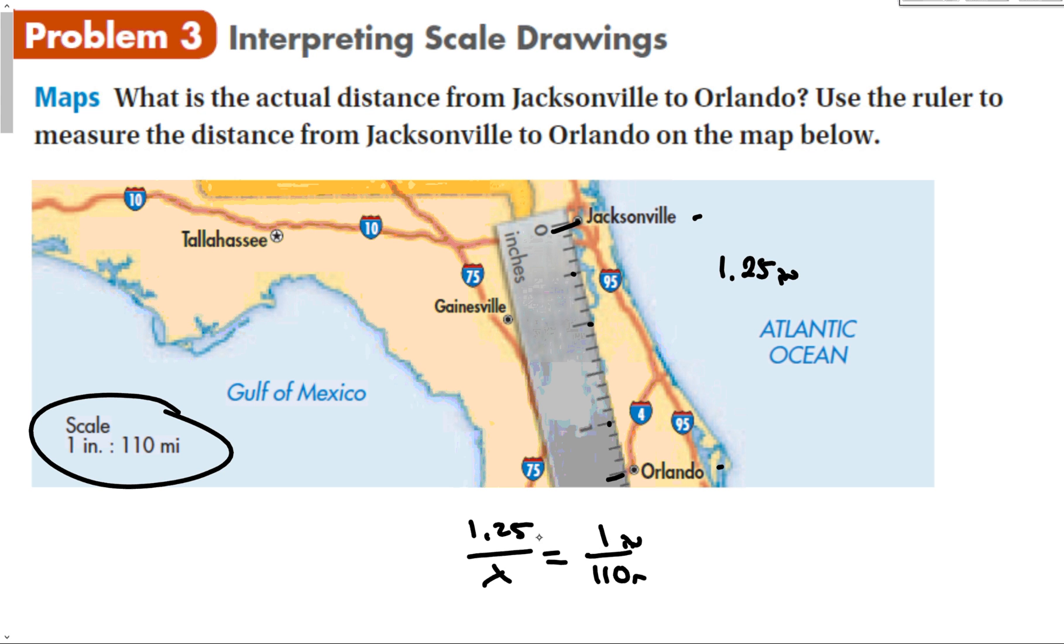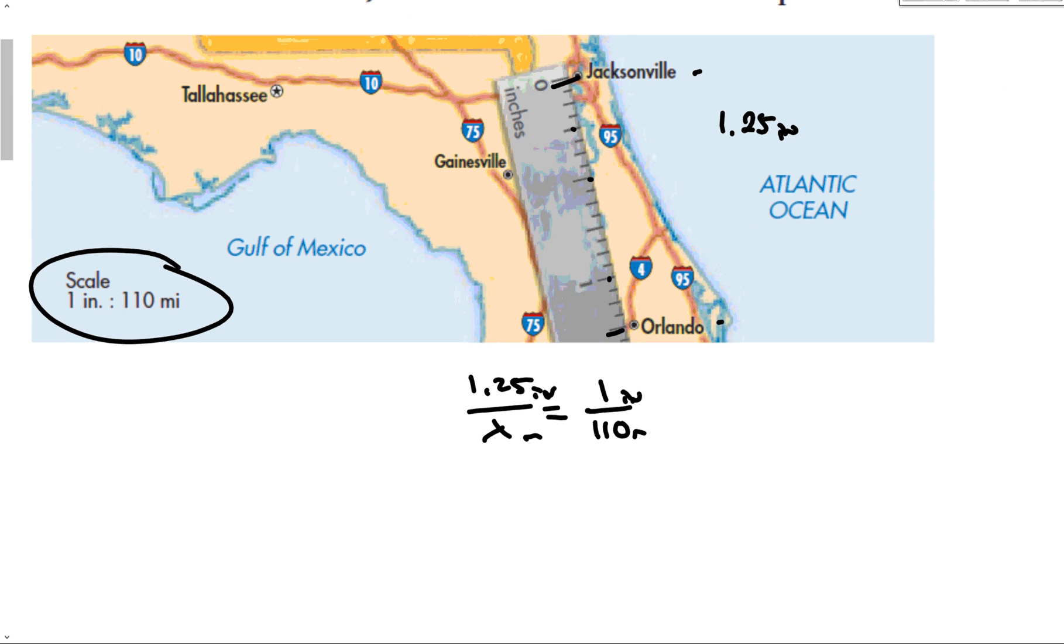Cross multiply, and we get 1.25 times 110 gives me 137.5, and that equals X. So it is 137.5 miles from Jacksonville to Orlando, according to this particular scale on this map.